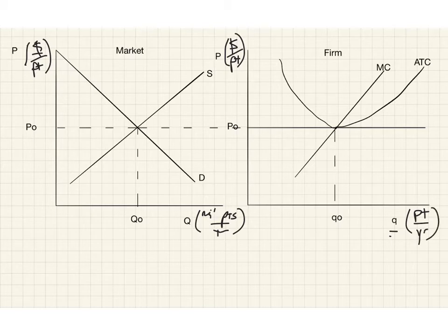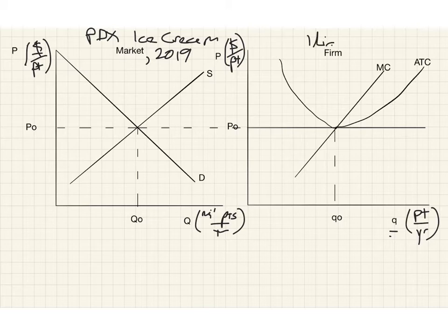Same units on the y-axis for the firm, but very importantly, I always use small q for the firm to remind myself that the firm is so much smaller than the market. We'll just have pints per year. This is an exaggeration, right? The Portland ice cream market wouldn't have thousands of firms, but if we're assuming the competitive model, we're assuming that each firm is atomistically small. Portland ice cream shop market, 2019 say, and then Ileana's firm.